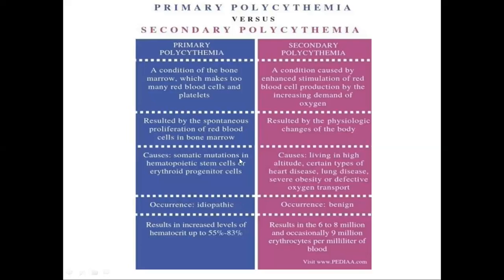The causes of primary polycythemia are somatic mutations in the hematopoietic stem cells or erythroid progenitor cells — it is mostly idiopathic with unknown cause. The causes of secondary polycythemia include living at high altitudes, certain types of heart diseases, lung diseases, obesity, or defective oxygen transfer. Secondary polycythemia is a benign condition.